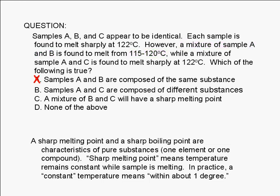How about choice B? Mixing samples A and C gives us a sample that still melts sharply at the same temperature as both samples A and C. Therefore, samples A and C must be identical substances. Choice B is also false.